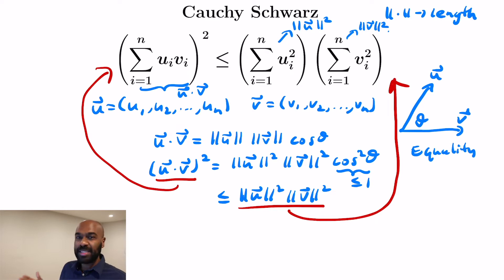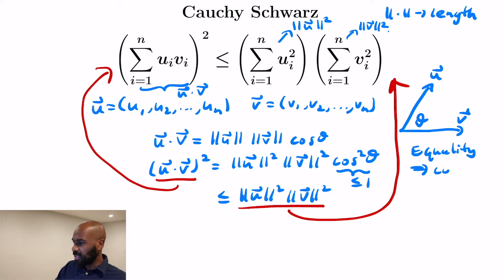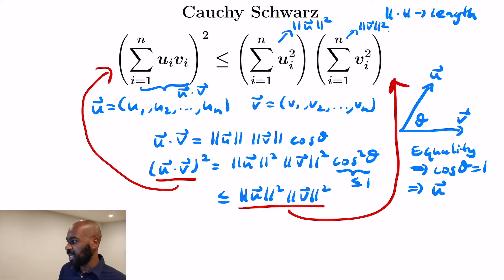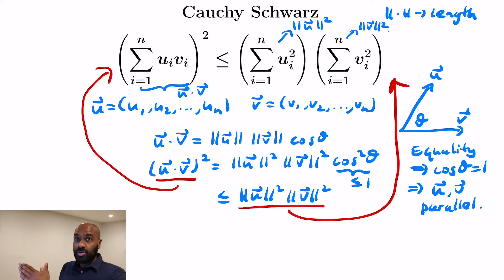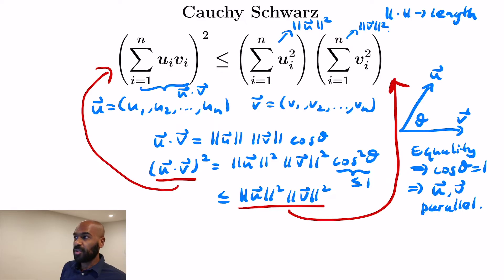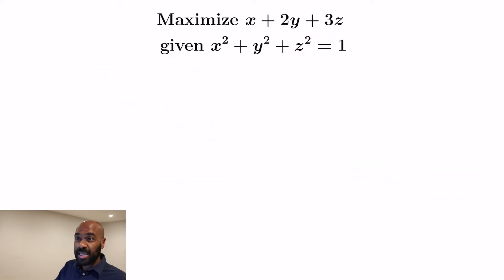Equality holds when cos²θ equals 1, meaning cosine of theta is positive or negative 1. That means the angle theta is either 0 or 180 degrees, so U and V are parallel vectors. In other words, the U_i's are all the same scalar multiple of the V_i's, or vice versa.